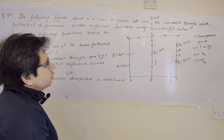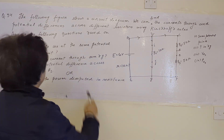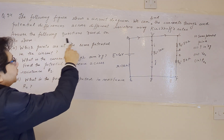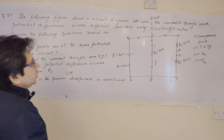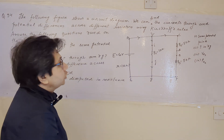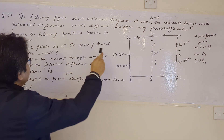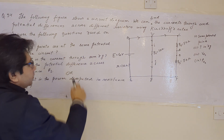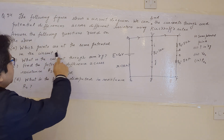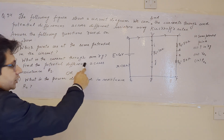Here is a circuit diagram. We can find the currents through and the potential differences across different resistors using Kirchhoff's rules. Answer the following questions based on the above. Part A: which points are at the same potential in the circuit?